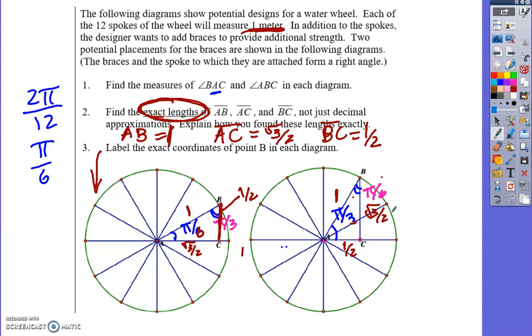Question three says label the exact coordinates of point B in each diagram. We want to find the coordinates of this point - x comma y. I know that this is cosine of the angle comma sine of the angle because of the stuff we knew with r, and r is one.